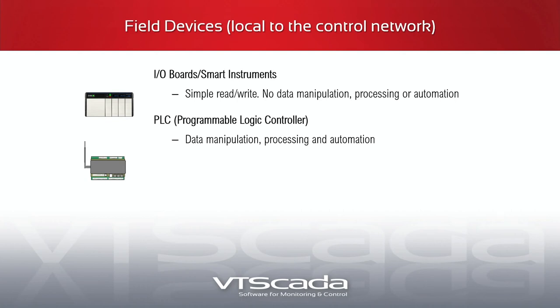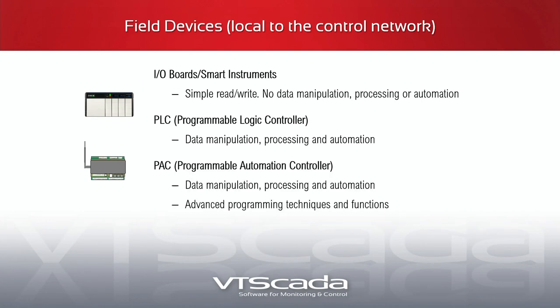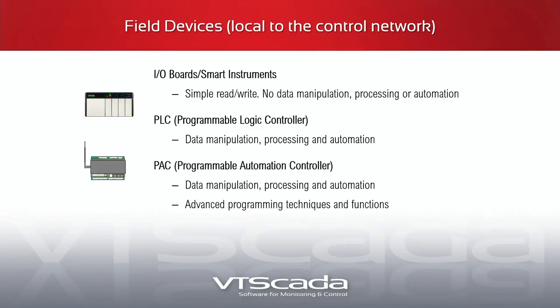PLCs — programmable logic controllers — are the primary control for your system. They define what the system does, how it affects the variables coming in from instrumentation, and how it controls the process. They vary greatly in capabilities and how they're programmed. The programmable automation controller, or PAC, goes a step beyond, including advanced analysis features within the controller itself. In oil and gas we also use flow computers, which automatically calculate flow for regulatory purposes — a very advanced type of calculation controller.